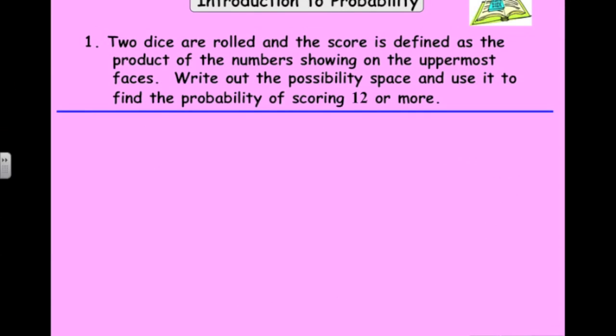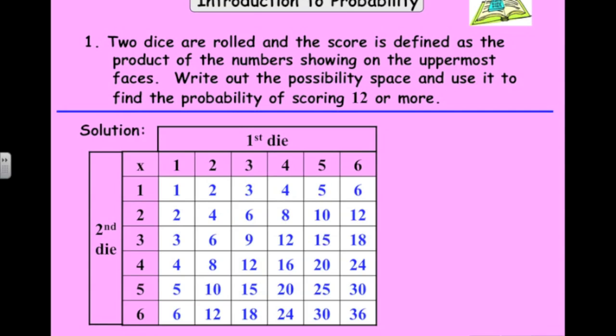Here is another problem where we're not adding the two dice together. We're actually multiplying the two numbers. So we could do a similar thing here. Write out the sample space of when we multiply the two numbers together. And there we go. There's our 36 different outcomes. What's the probability of scoring 12 or more? So let's identify in our table there the values that are 12 or more. We count them all up. There's 17 outcomes out of 36 that are 12 or more. So that's another example of using the sample space to get the probability.